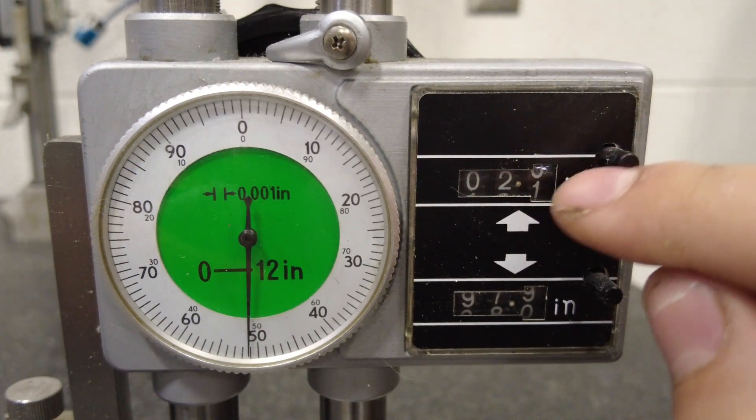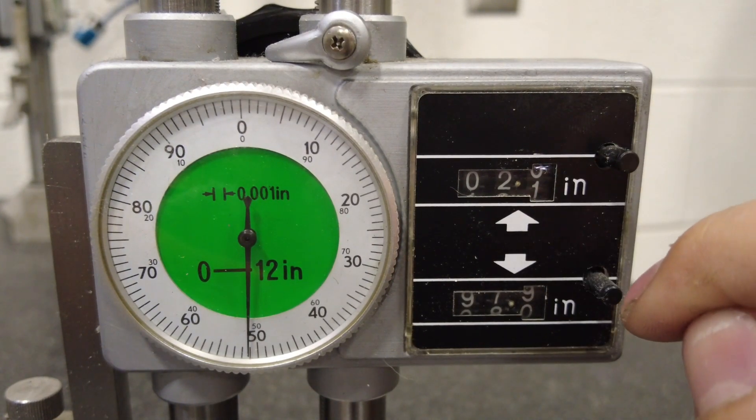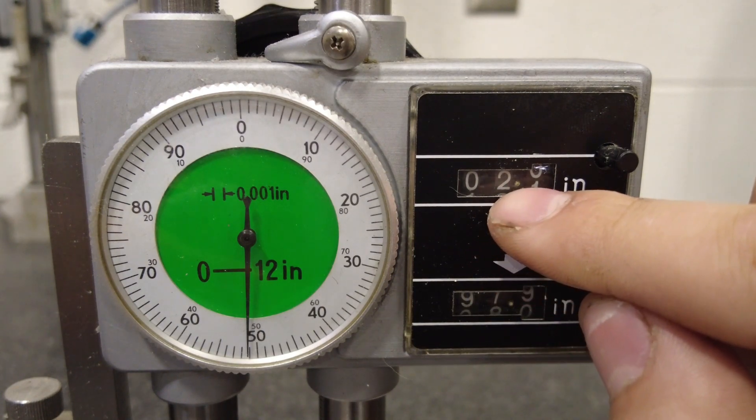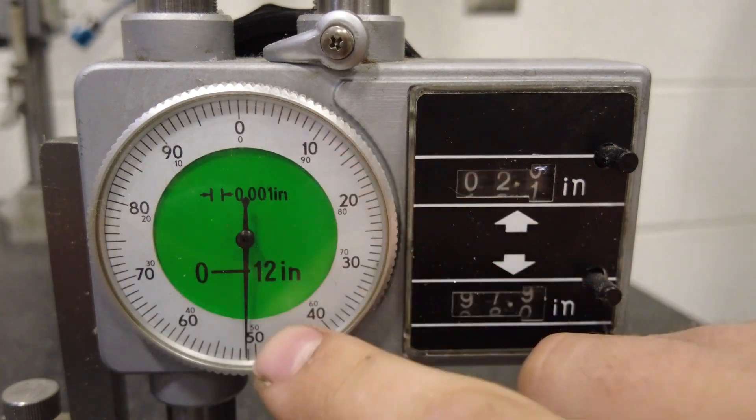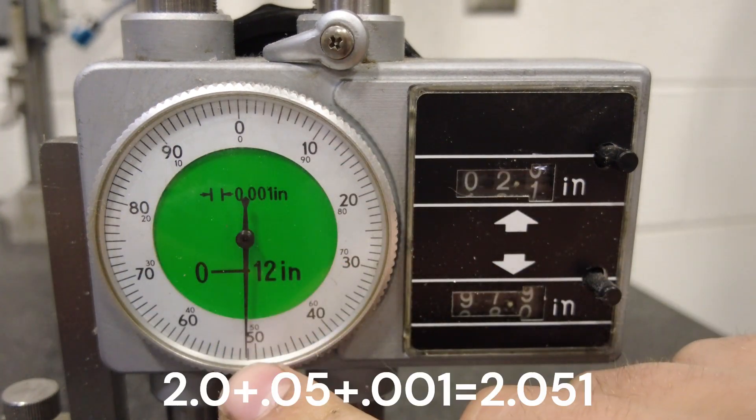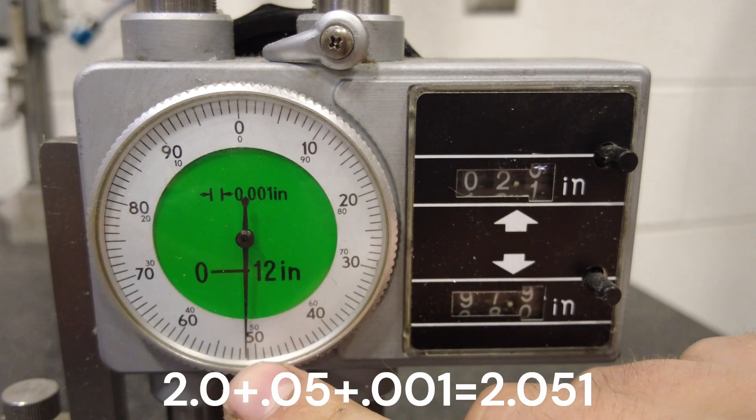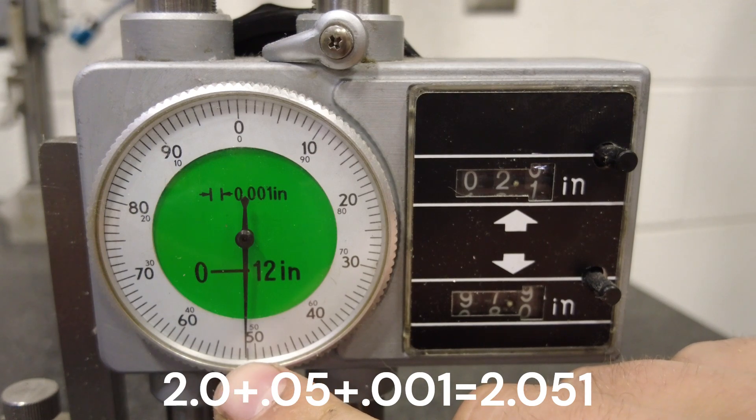It's a little tricky to tell. Sometimes these dials are a little off. But we know this is going to be 2.0, plus we have to add whatever this shows. Right here you can see there's a 5, 50, and then this is going to be 51.